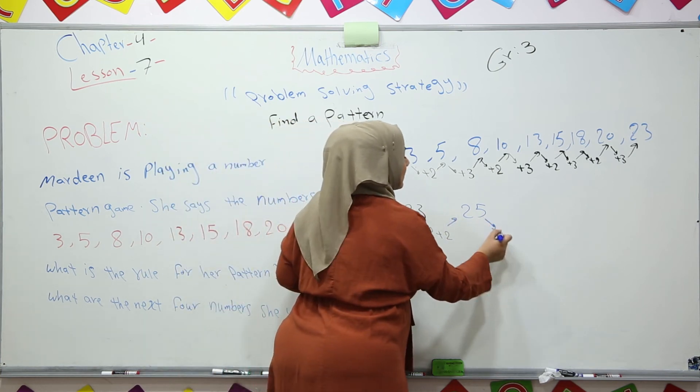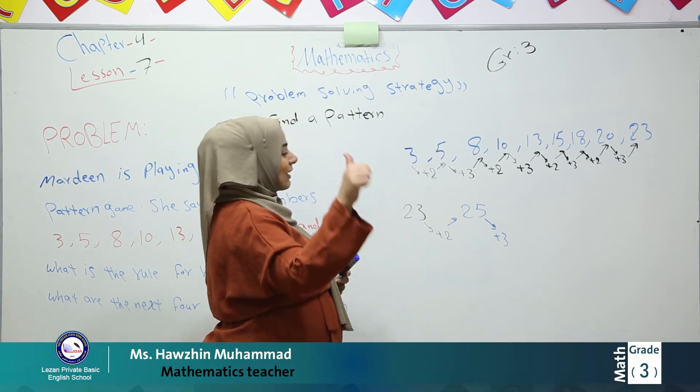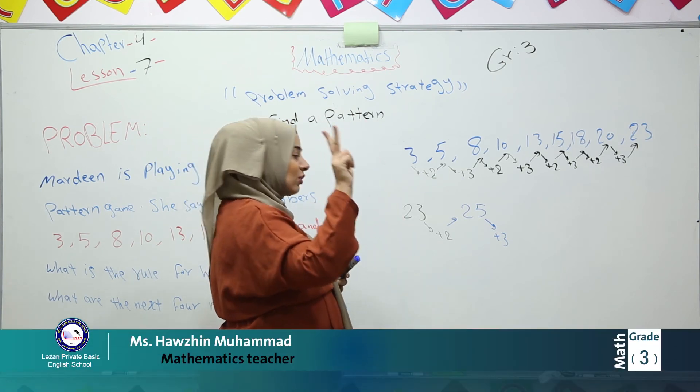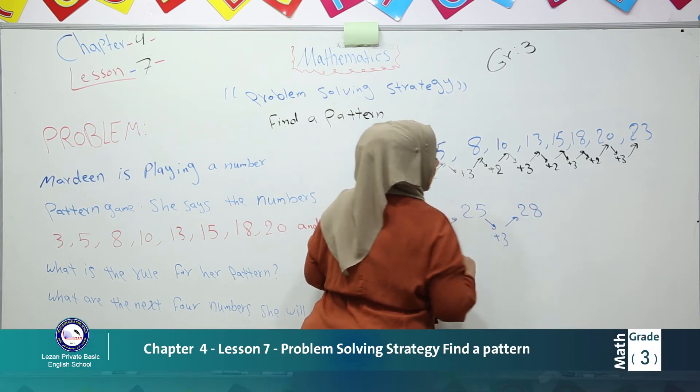We should find another three numbers. Add by 3 this time. 25, 26, 27, 28. So it is 28.